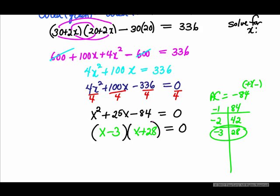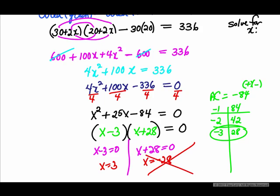Setting each factor equal to zero: x minus 3 equals 0 gives x equals 3; x plus 28 equals 0 gives x equals negative 28. Since x represents the border width around the flower bed, it can't be negative. So our answer is that the border is 3 feet all around.